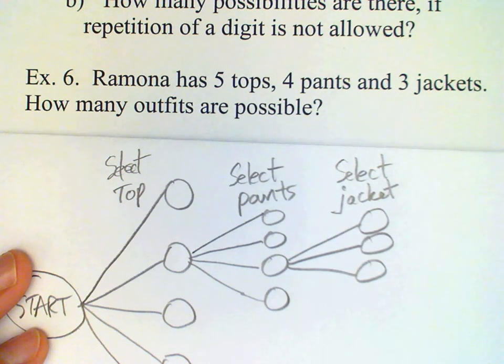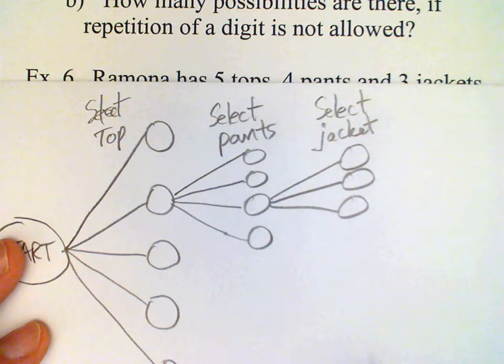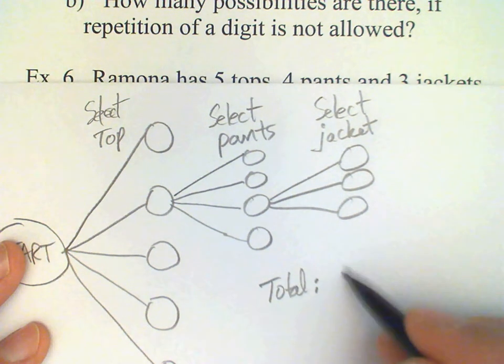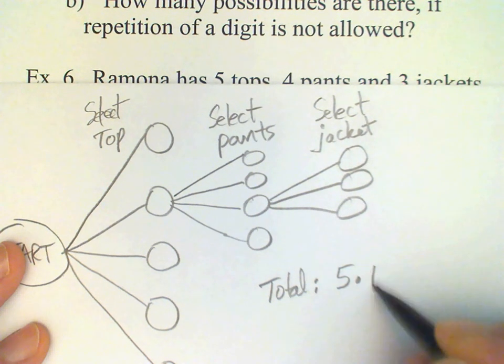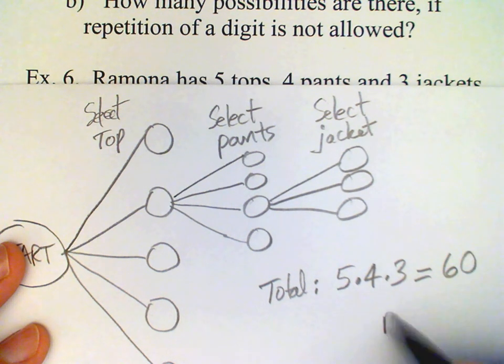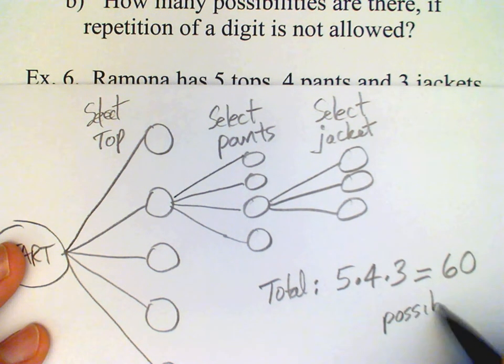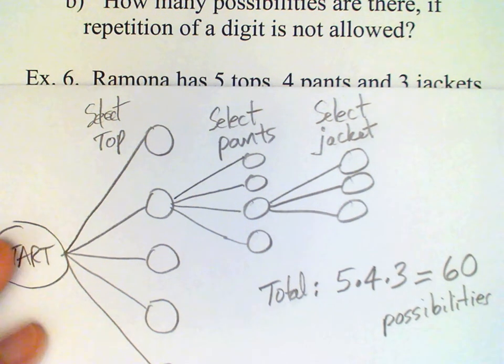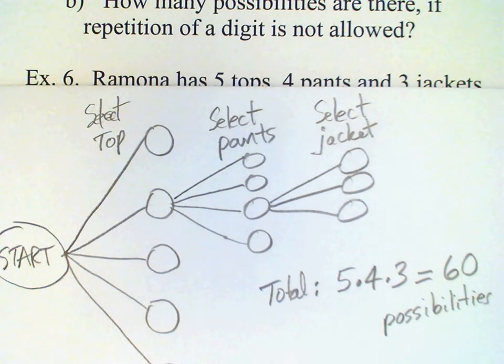Okay, so that leads us to conclude that the total is going to be 5 times 4 times 3, which is 60 possibilities. Now, it may well be that there are restrictions on this problem involving which items of clothing will go with other items, but that hasn't been stated, so we'll just leave it at that.